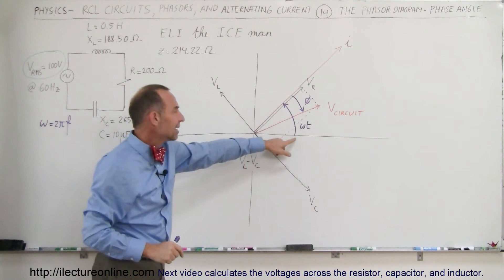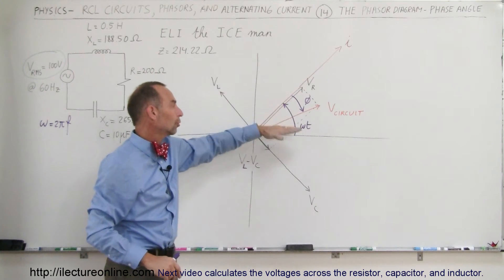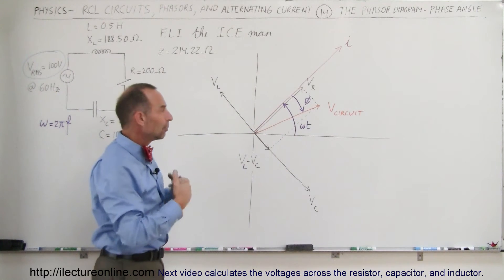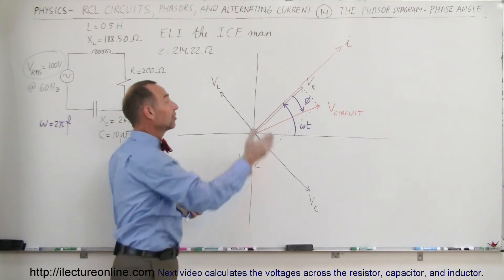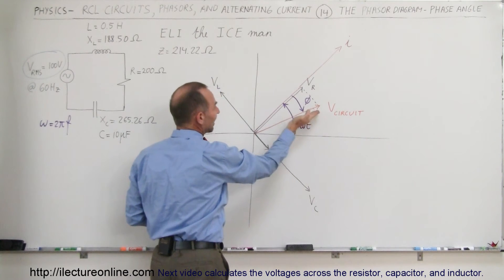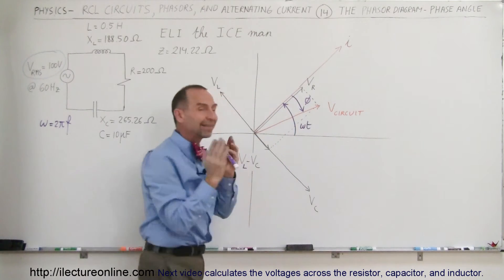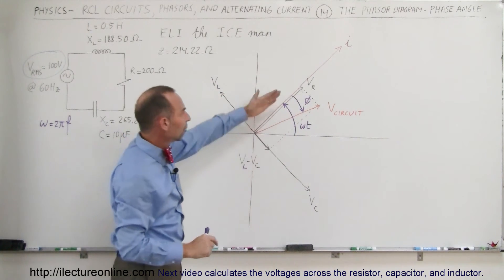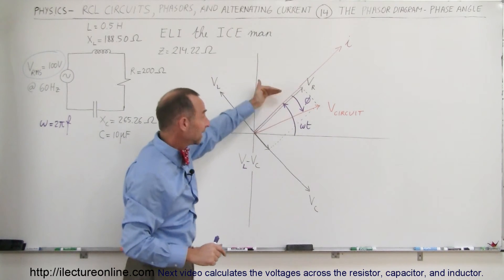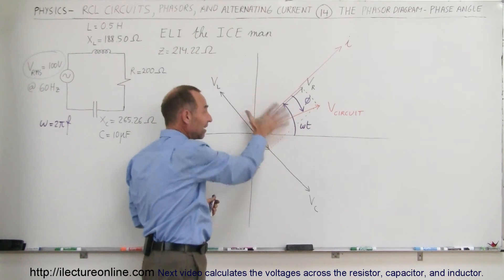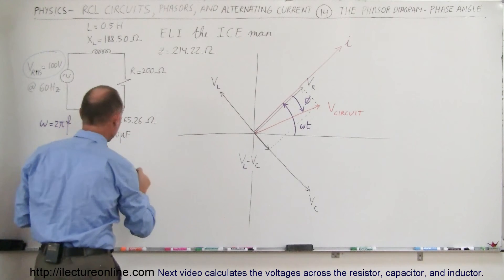Since omega-T is always relative to the horizontal axis and gives you the angle of distance to the current, or the angle of distance to the voltage across the resistor, where is the voltage in time or in phase relative to that current? The voltage across the circuit lags the current, because the current leads the voltage, and the phase angle is that difference — always measured from where the current is to where the voltage across the circuit is. Since it's pointing in a clockwise direction, opposite to the rotation of the phasor, that means it's a negative phase angle.